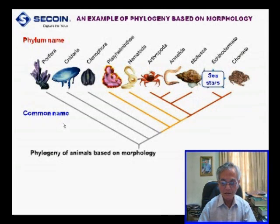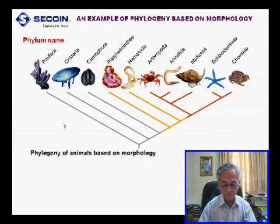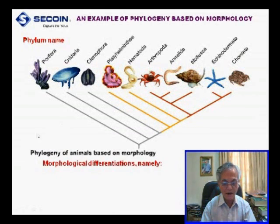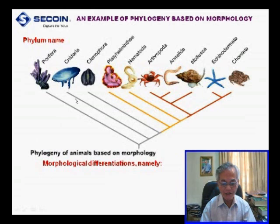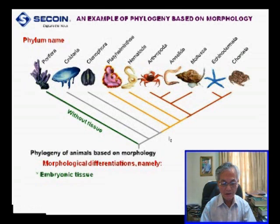Also included are the sea star and vertebrate. You will see the morphological characteristics from which we can differentiate these clades. The first differentiation of morphology is embryonic tissue. This clade — sponge — is without tissue.